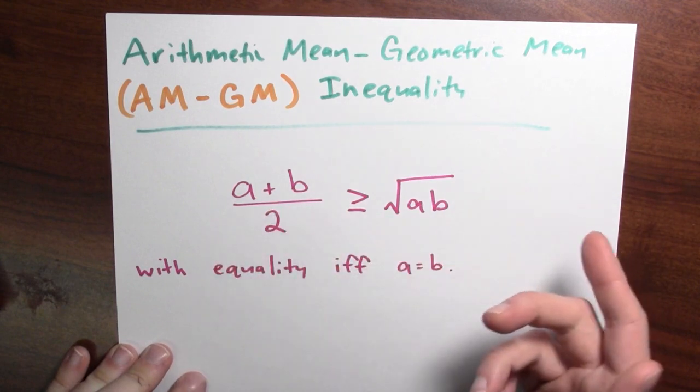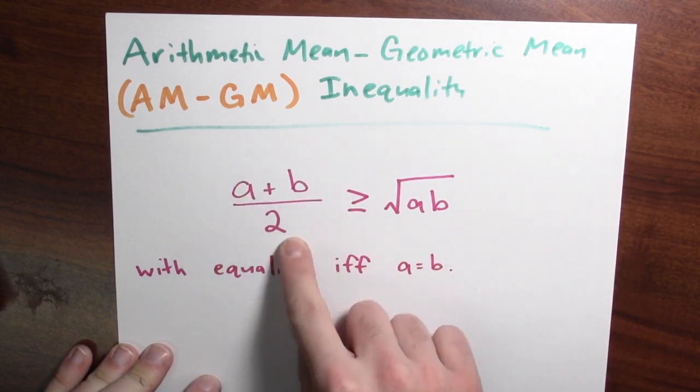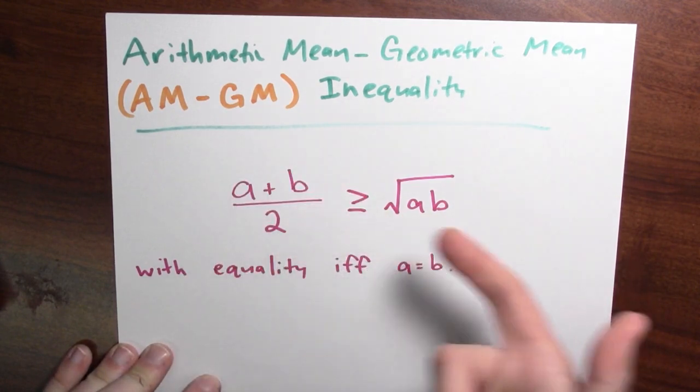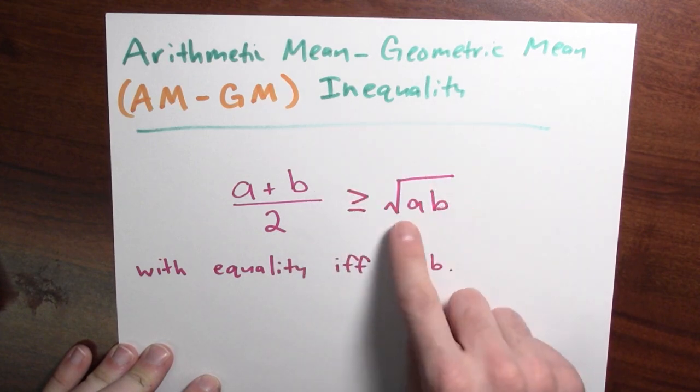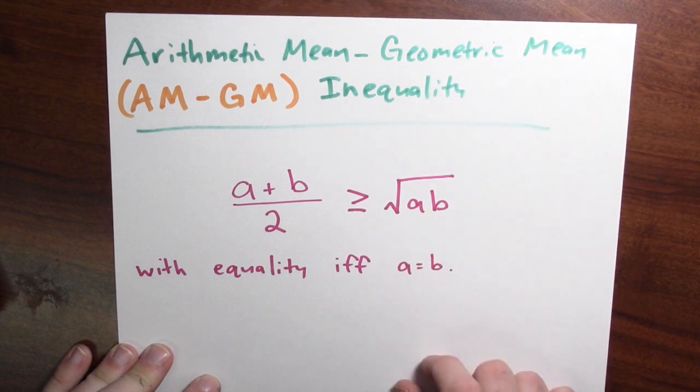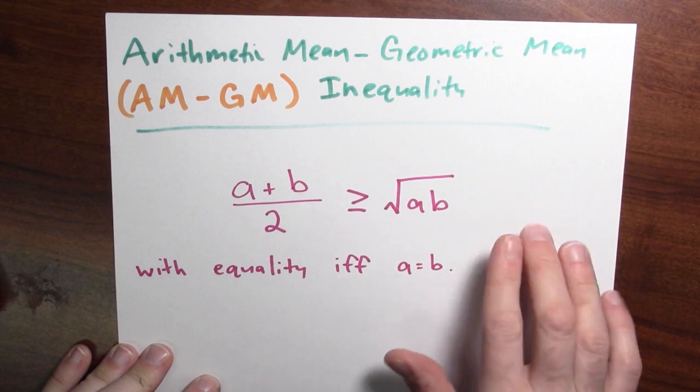That for numbers A and B, the arithmetic mean, it's a fancy word for the average of A and B, is bigger than or equal to the geometric mean, which is the square root of the product of A and B. And this inequality becomes an equality if and only if A and B are the same.